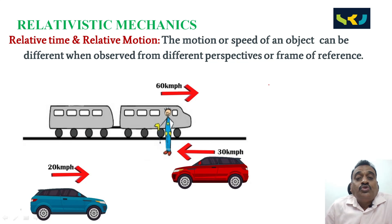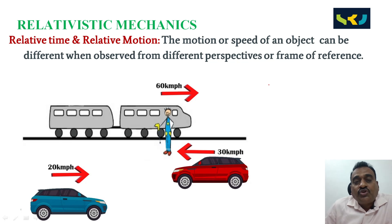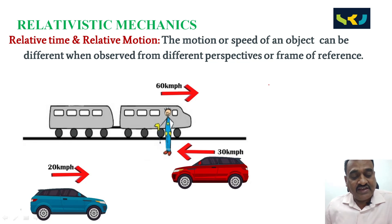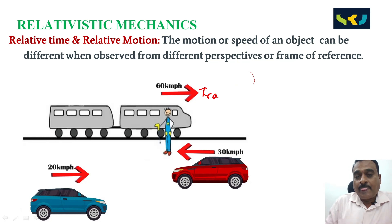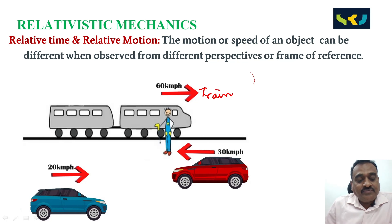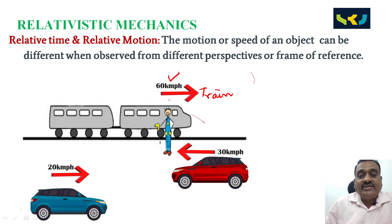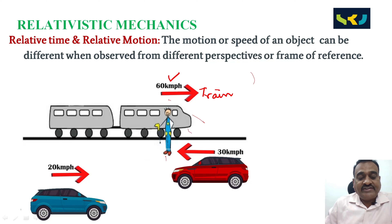What is relative motion? The motion or speed of an object can be different when observed from different frames of reference. For example, imagine a train moving along a track at a constant speed of 60 kilometers per hour. The first observer is standing still on the Earth and observes the train moving at 60 kilometers per hour.